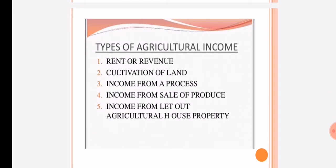Types of Agricultural Income: First is Rent or Revenue. Second is Cultivation of Land. Third is Income from Process. Fourth is Income from Sale of Produce. Fifth is Income from Let-out Agricultural House Property.